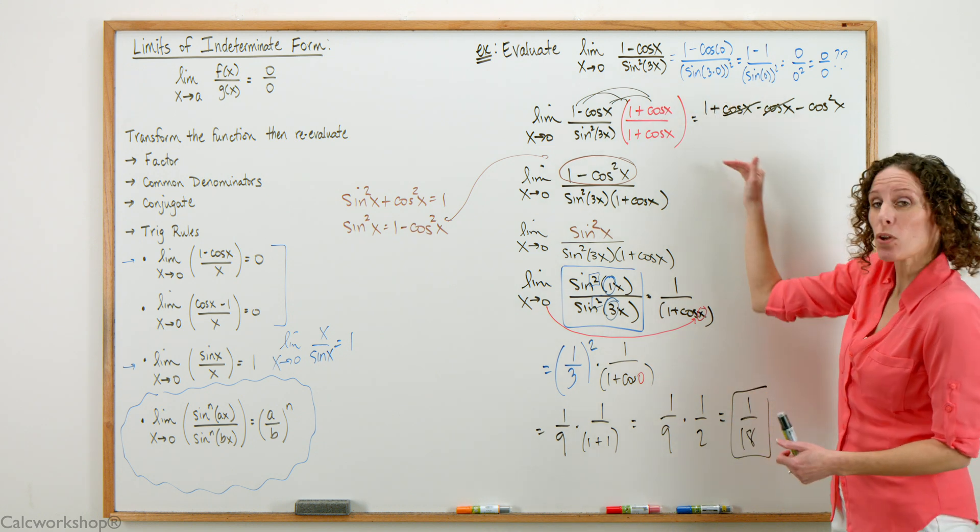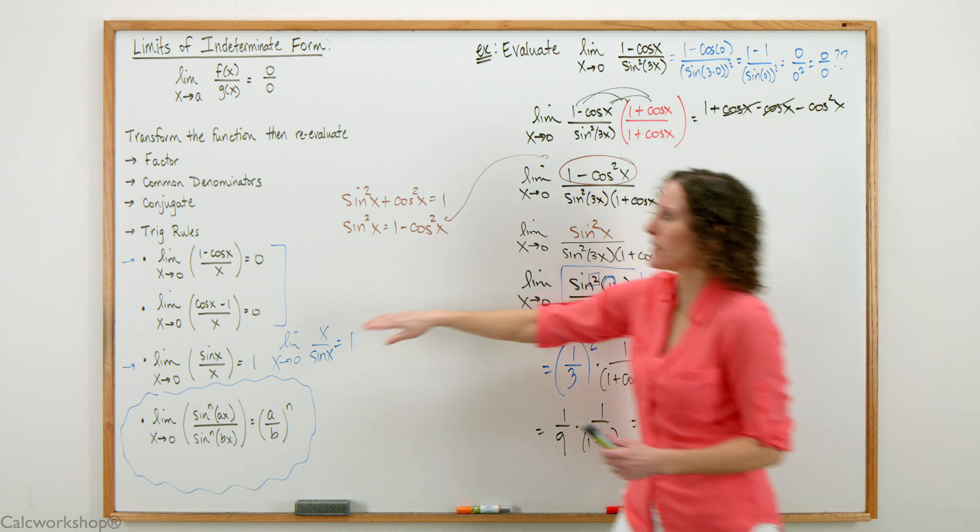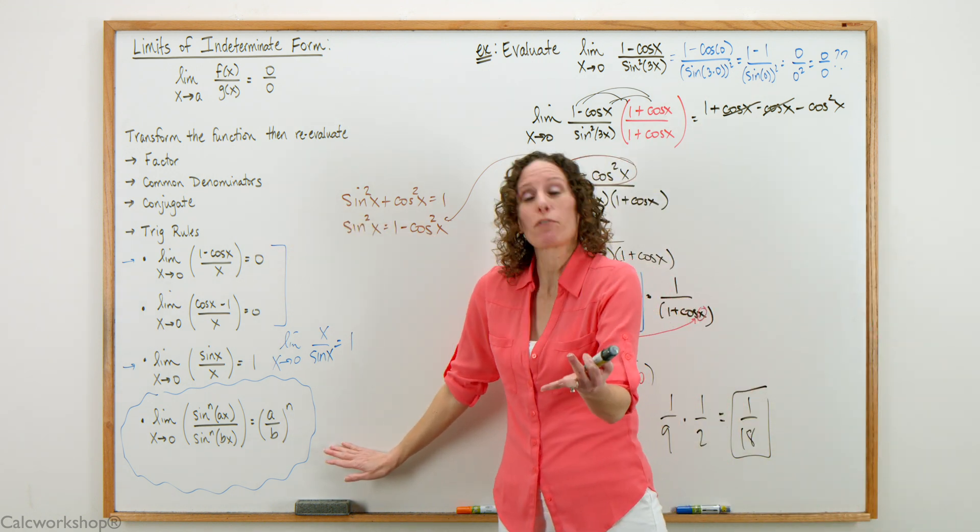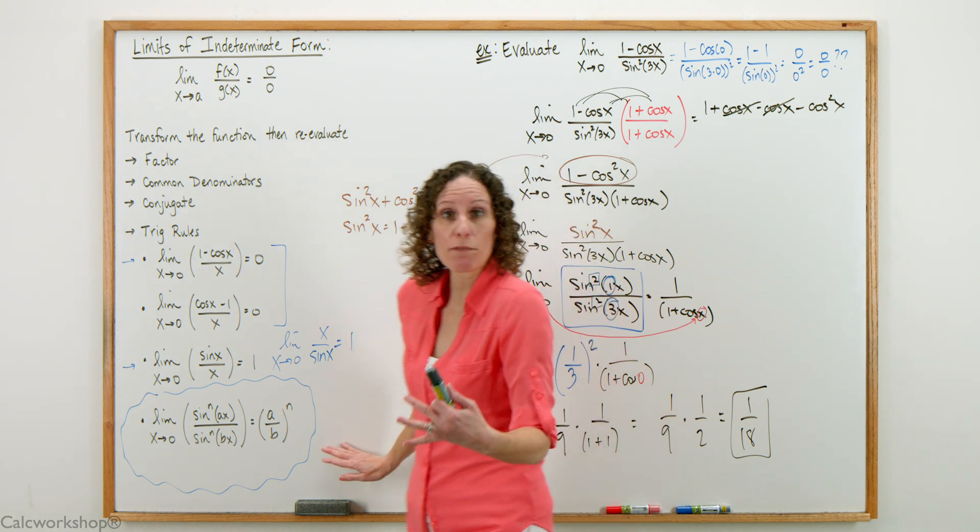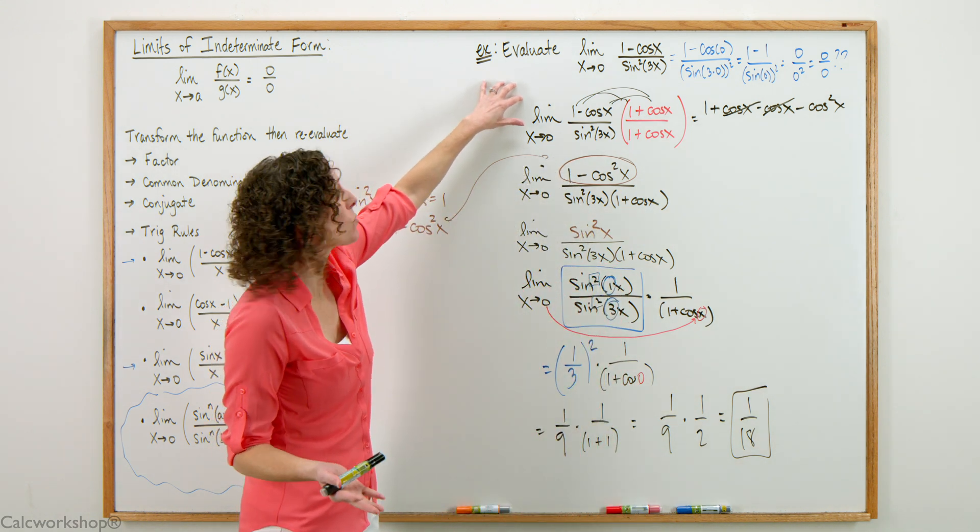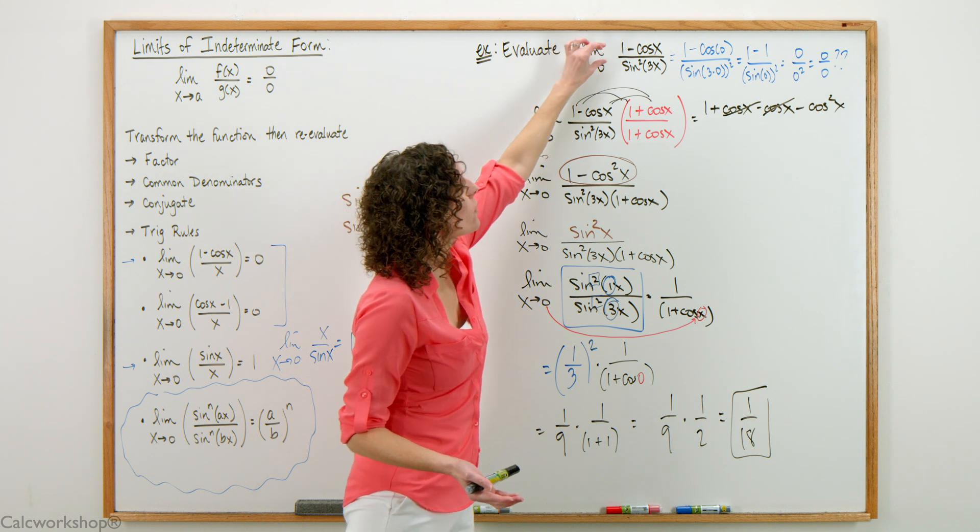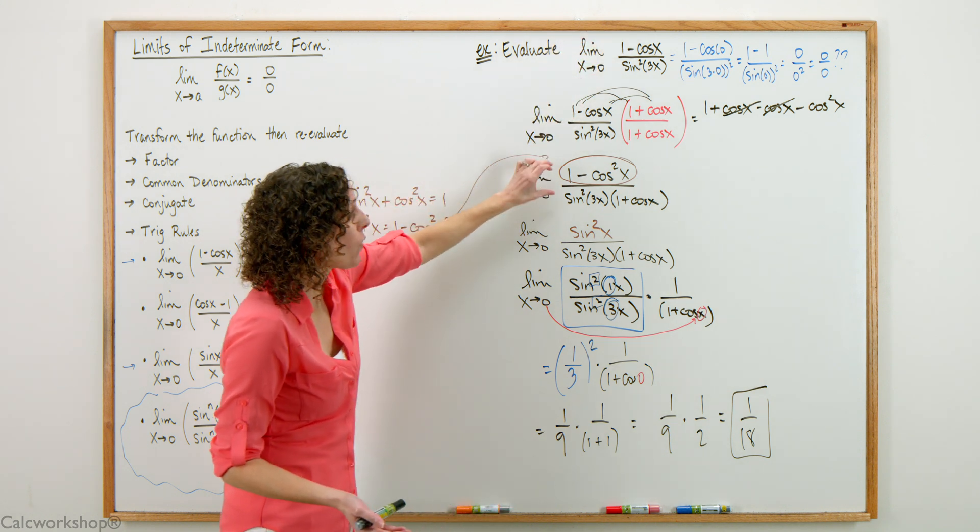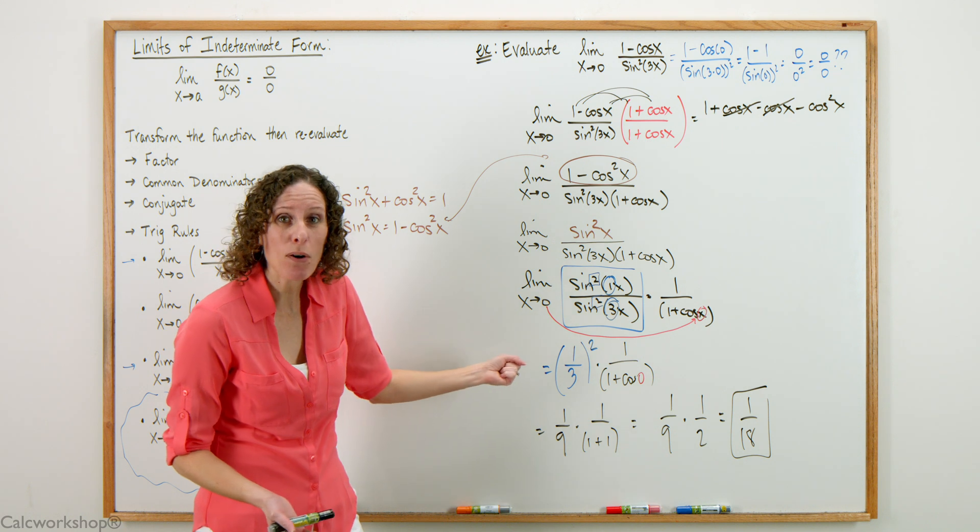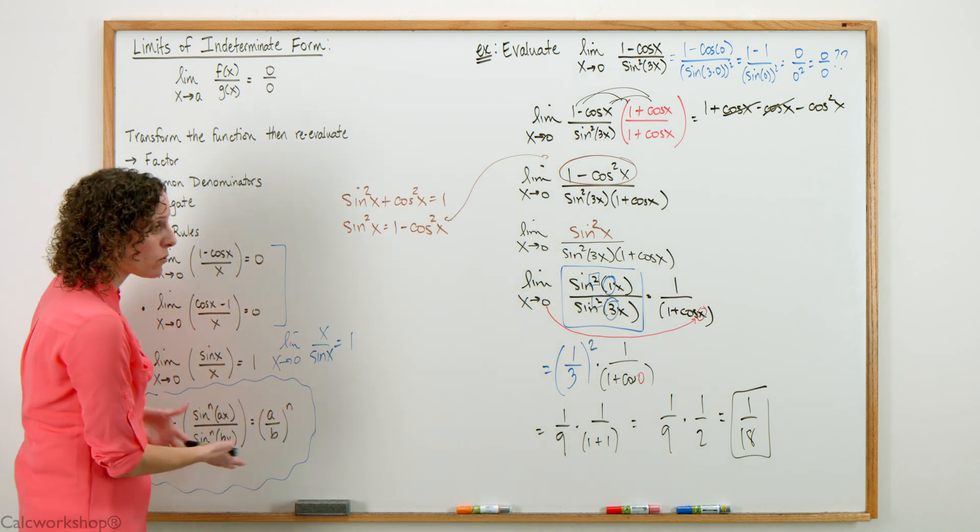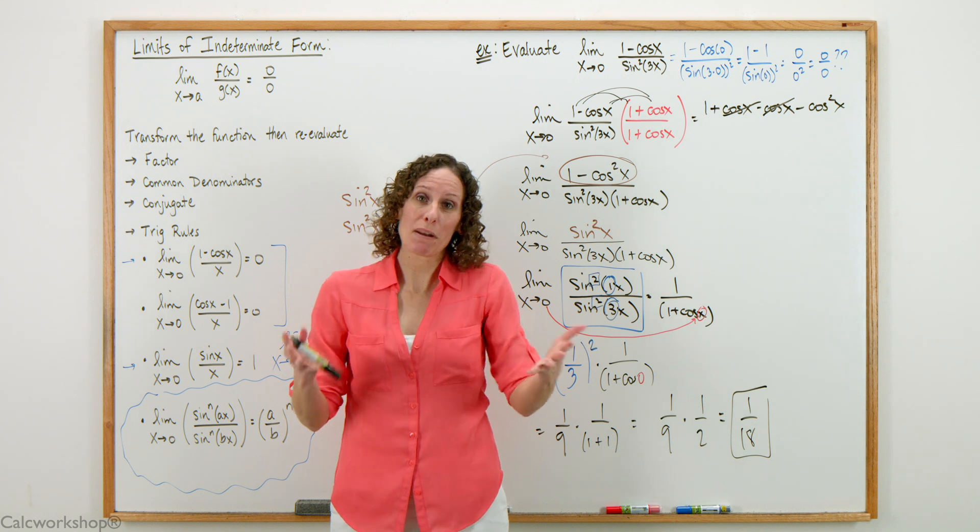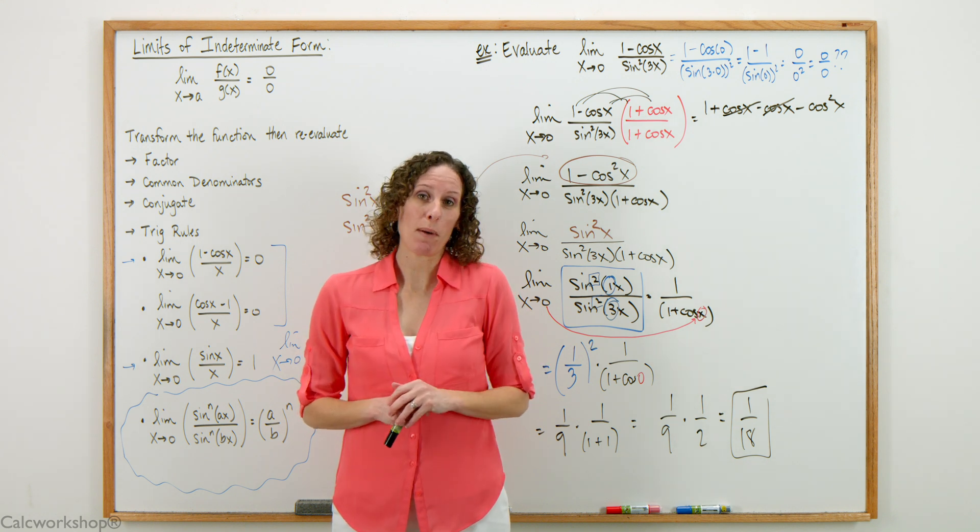This is how we utilize two different properties, the conjugate as well as our trig rule, for evaluating a limit of indeterminate form. We had to convert 1 minus cosine to 1 minus cosine squared, change it to sine squared, recognize our powers, and recognize our trig rule to evaluate the function. That's how we simplify a limit of indeterminate form with two different properties.